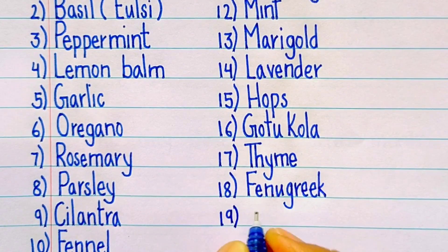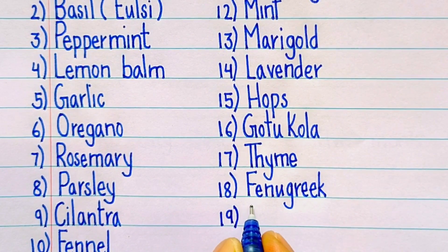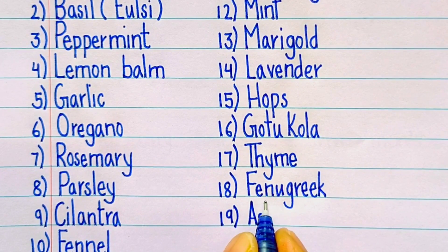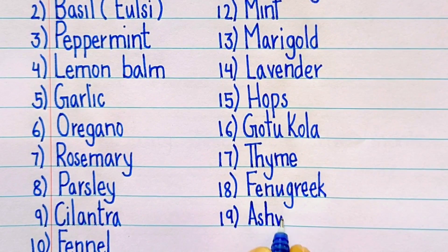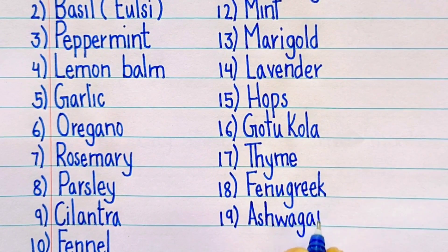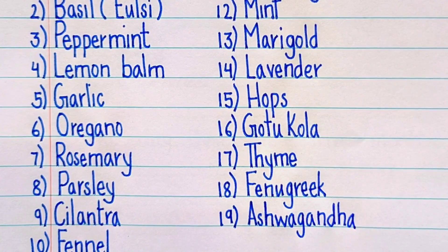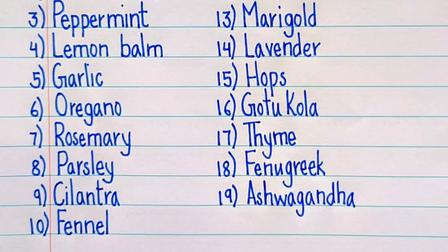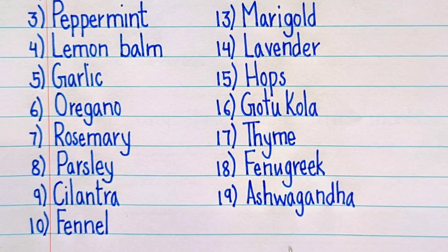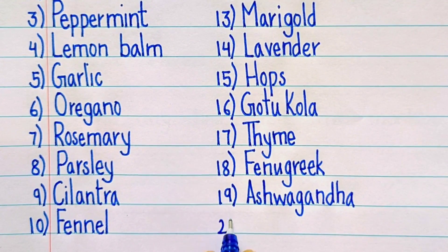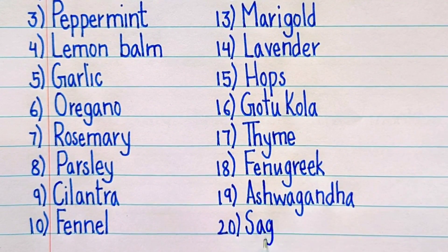Nineteenth one is ashwagandha, A-S-H-W-A-G-A-N-D-H-A. And the last one is sage, S-A-G-E.